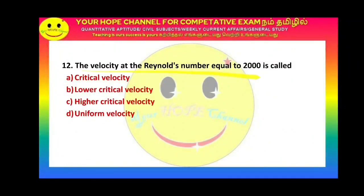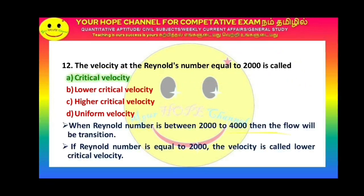Next question: The velocity at Reynolds number equal to 2000 is called what? In pipe flow, at exactly Re = 2000, this is the critical velocity. Below the critical velocity is laminar flow; above the critical velocity, the flow transitions.